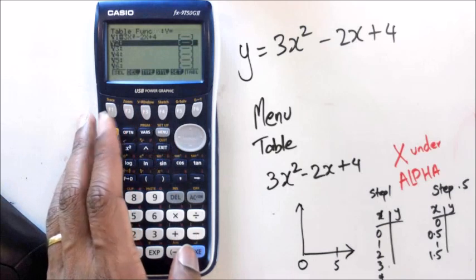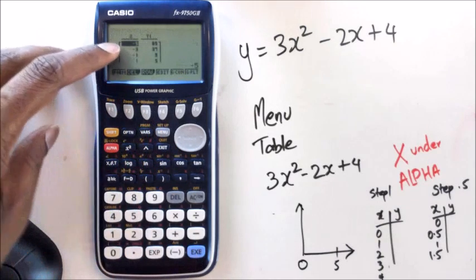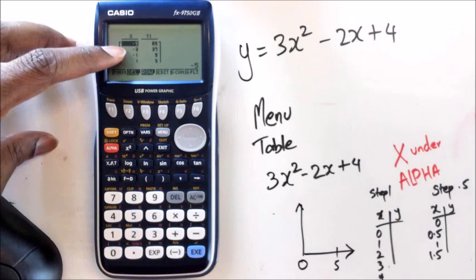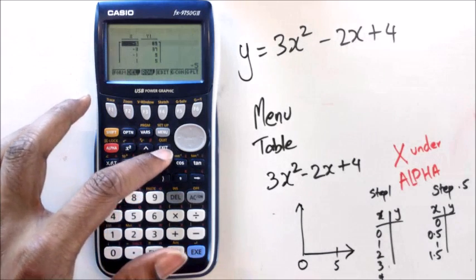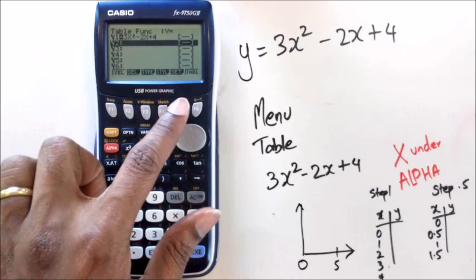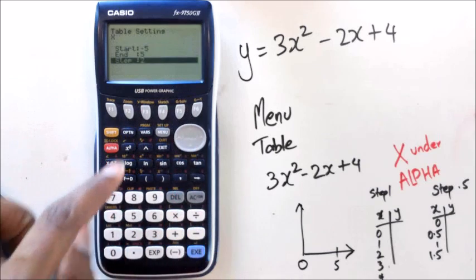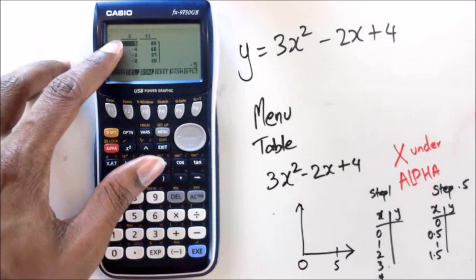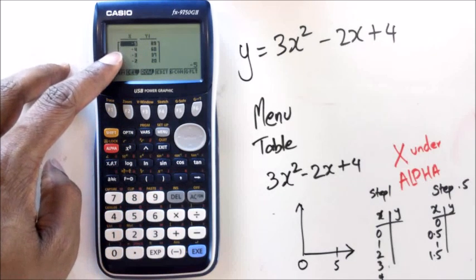When I press enter and enter again, what you'll notice is you see how my value is starting at minus 5, and it's going to minus 3, minus 1, so it's actually increasing by 2. And if I want to reset it, just go back, exit, click on set, and I want to put my step to 1, and enter and enter. Now you'll see that it's like minus 5, minus 4, minus 3, minus 2.